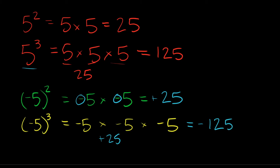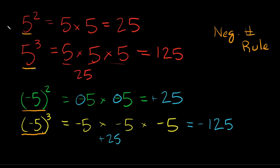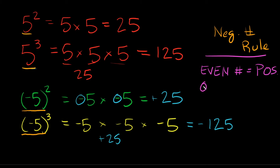Here's your first rule with exponents, specifically for negative numbers. When you have an even numbered exponent, your answer is going to be positive. And when you have an odd numbered exponent, your answer is going to be negative.